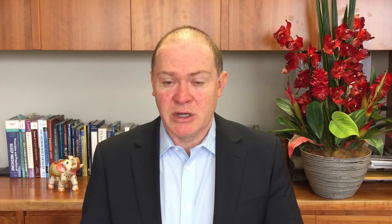People with reduced amplitude feel that at night time they're not particularly sleepy, and during the daytime they're not particularly alert either — they can feel pretty much the same across a 24-hour period. The third property is the phase — that's how your circadian rhythm fits to the outside world — and this is where the first two circadian rhythm sleep disorders come in.